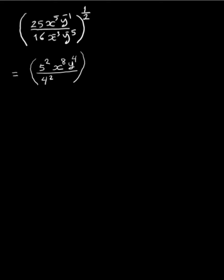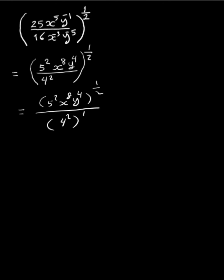Now we distribute the exponent one half to both the numerator and denominator by the power of an equation rule. In the numerator, the exponent one half can be distributed to each factor by the power of a product rule.